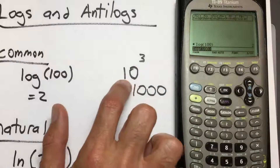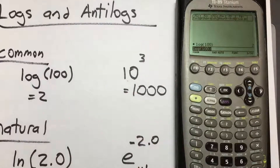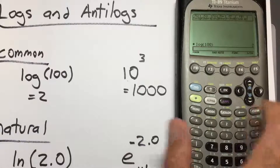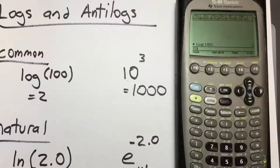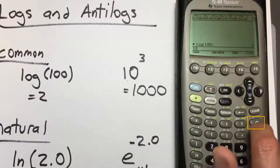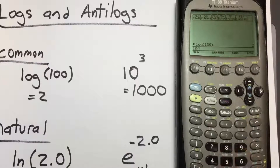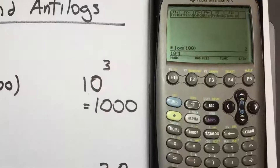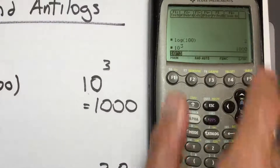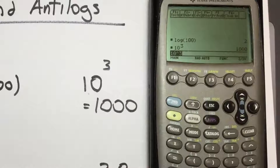To take the antilog on the TI-89, there's no convenient key for that. The best way is to clear the entry bar, manually type 10, press the caret key to show an exponential is coming, enter 3, and press enter. This still gives us 1000 as expected.